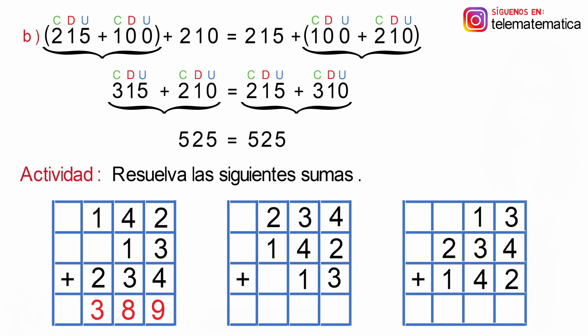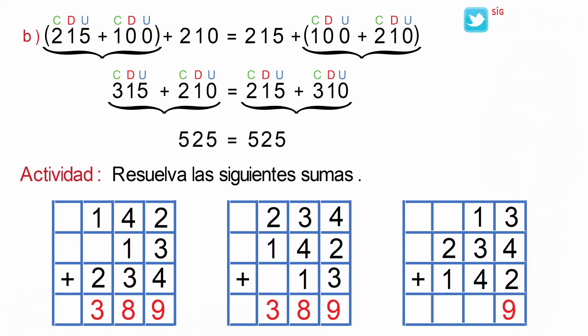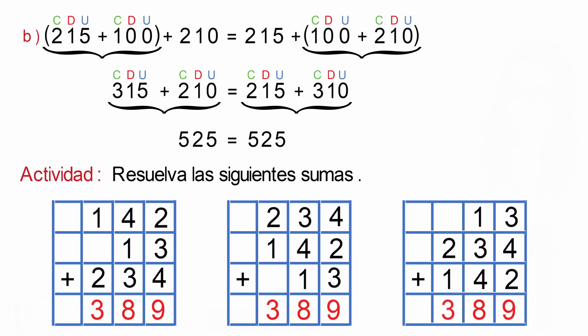Veamos ahora en la segunda tabla: el resultado de la columna de las unidades es 9, el resultado de la columna de las decenas es 8, y el resultado de la columna de las centenas es 3. Y por último en la tercera tabla, el resultado de la columna de las centenas es 3.